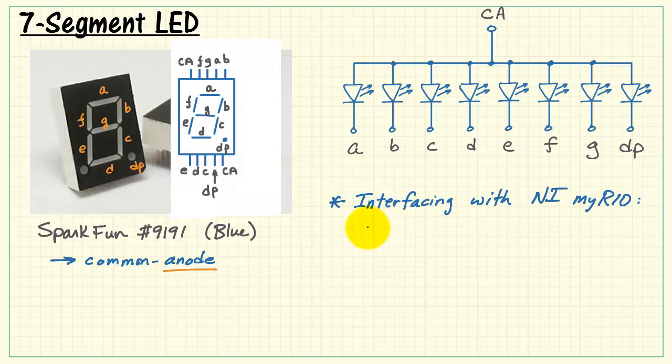Let's take a look at how you can interface this device to the NI MyRio. The current sinking version for LEDs is the only option for this device. That's because all of the anodes are wired together, and each anode needs to be connected to the 3.3 volt supply.